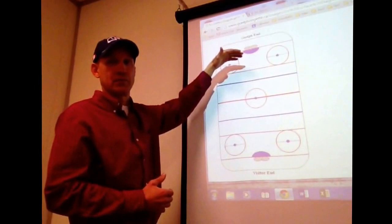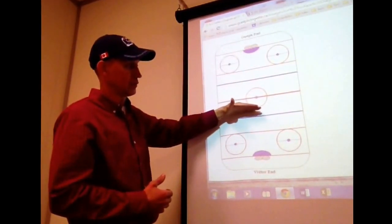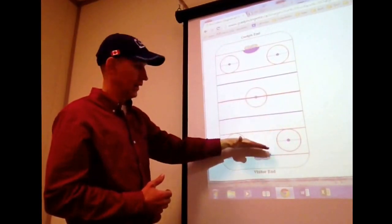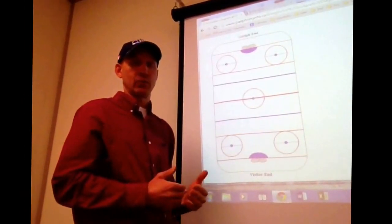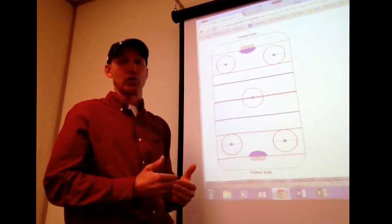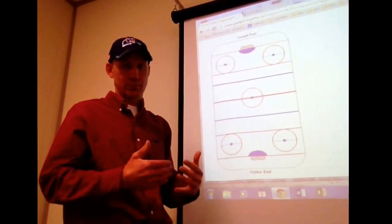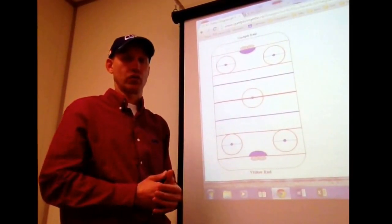When we talk about the offensive zone in practice, we'll be talking about the zone from the blue line in on the opposition's net. And again, we call that the offensive zone because when we have control of the ring in that area, we'll be on offense and we'll be trying to score on their net.